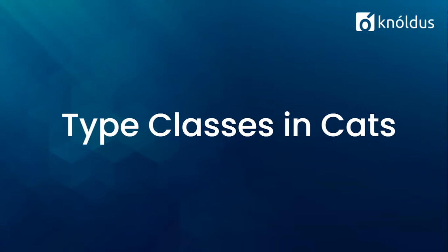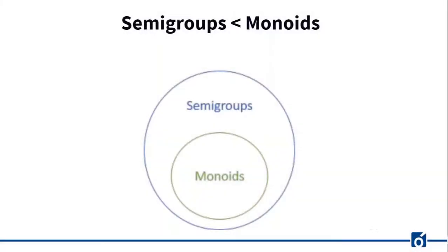Now let's talk about two of the core type classes provided by Cats: Semigroups and Monoids. In Haskell, there is a concept of monoid, but Haskell's monoid is split into Semigroups and Monoids in Cats. They are also type aliases of algebra.Semigroup and algebra.Monoid in category theory. Semigroup is a weaker version of Monoid — let's see how.